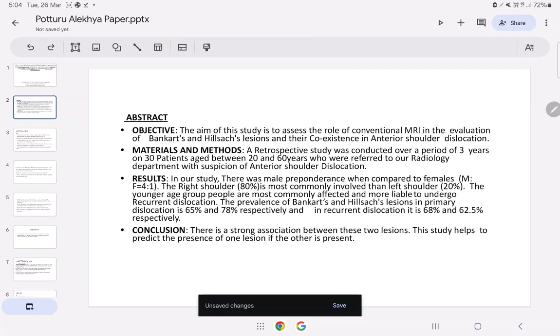Prevalence of Bankart and Hill-Sachs in primary dislocation is 65% and 78% respectively, and in recurrent dislocation it is 68% and 62.5% respectively.